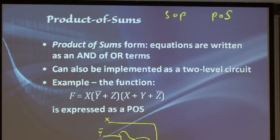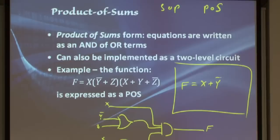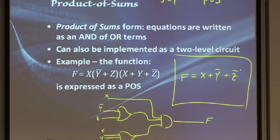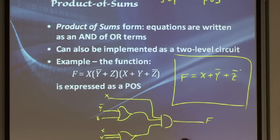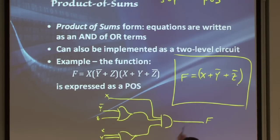What if I have a function like x OR NOT y OR z? Is this sum of products or product of sums? It is actually both: you can think of it as sum of products where each variable is just a single-variable product, or as product of sums where the whole thing is a single sum term. This special form is both.